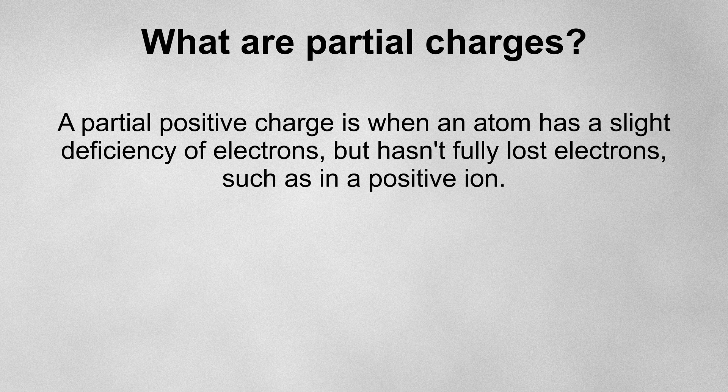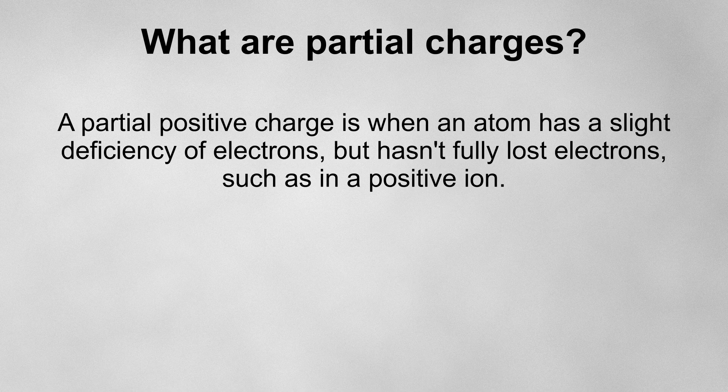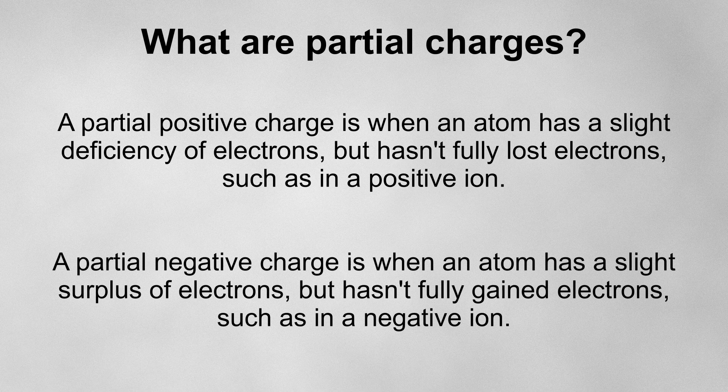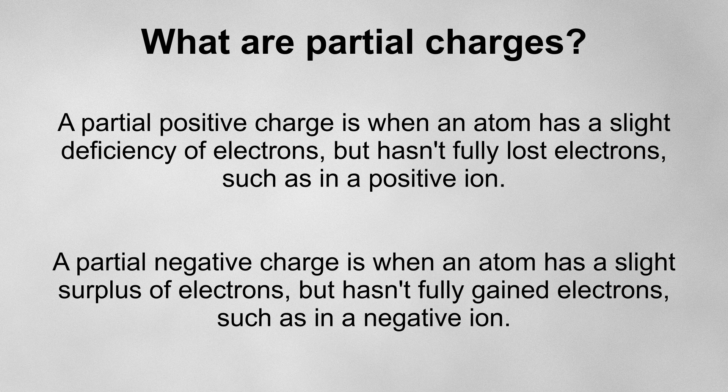A partial positive charge is when an atom has a slight deficiency of electrons, but hasn't fully lost electrons, such as in a positive ion. A partial negative charge is when an atom has a slight surplus of electrons, but hasn't fully gained electrons, such as in a negative ion. There are a couple of ways that this can happen.